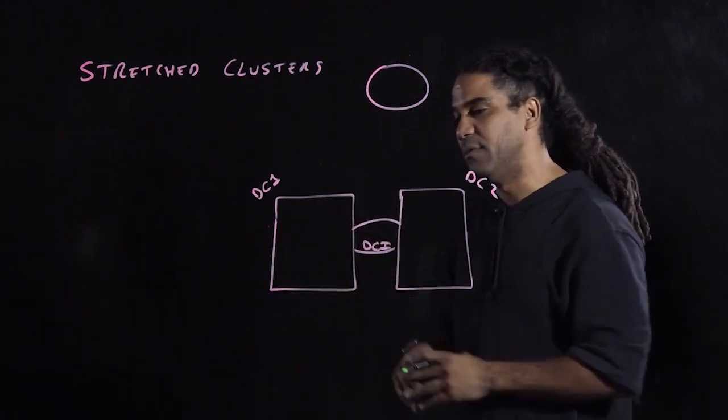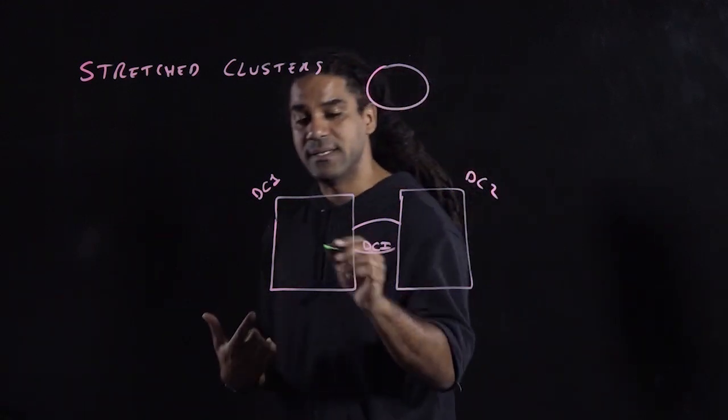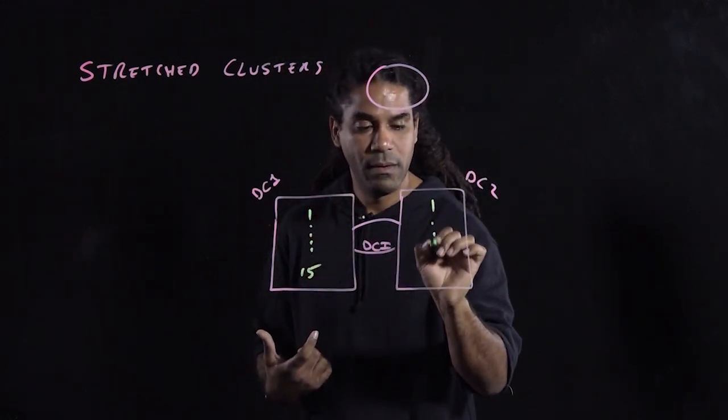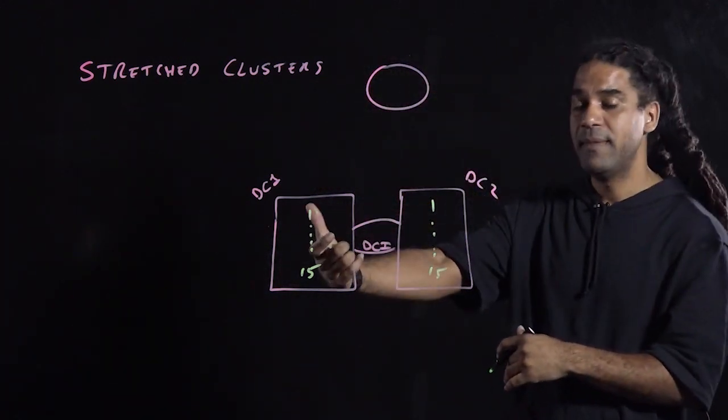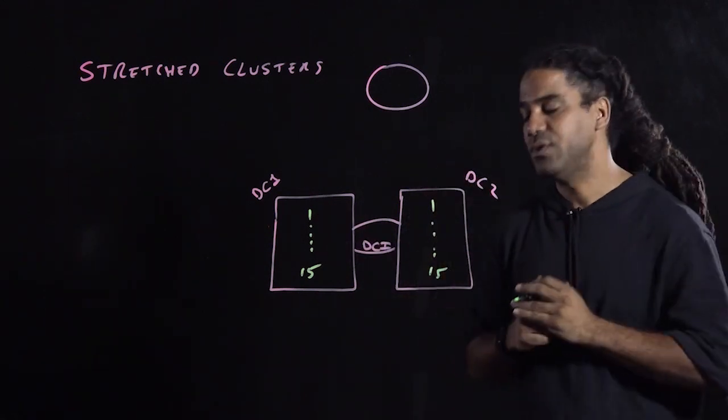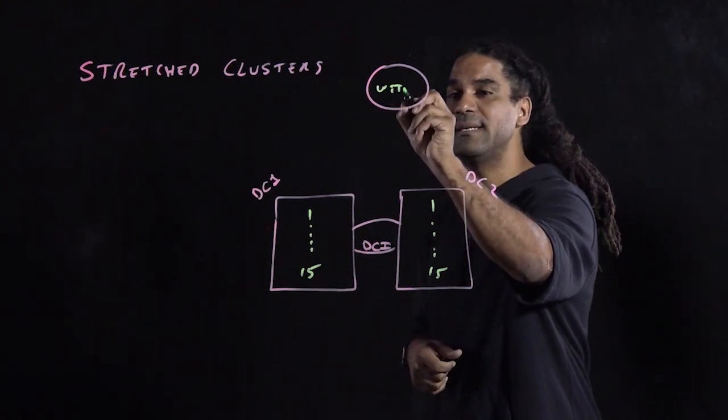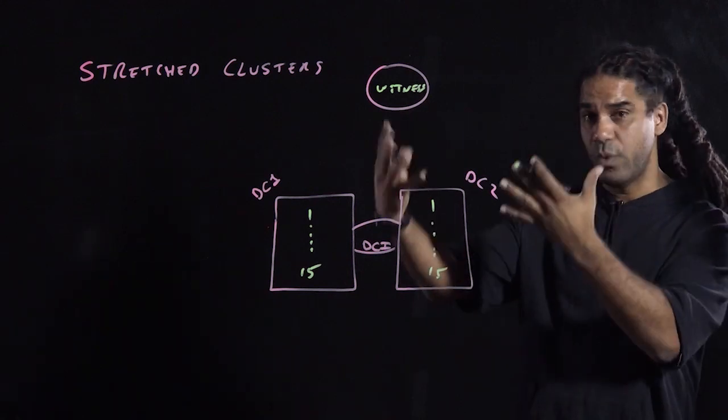When it comes to vSAN, however, there are some conditions that we must meet. One of them is that in each data center, you can have up to 15 ESXi hosts for a total of 30, and then because you have two locations, you need a third location to be the witness. So we're going to have location number three, which is going to hold an ESXi host in a virtual appliance that is going to be the witness.